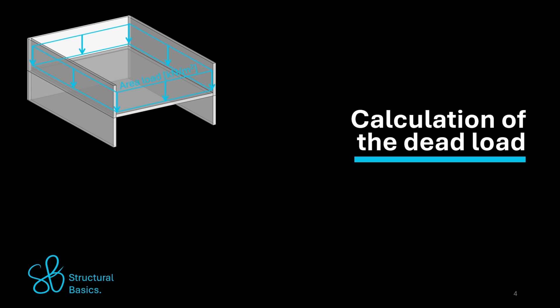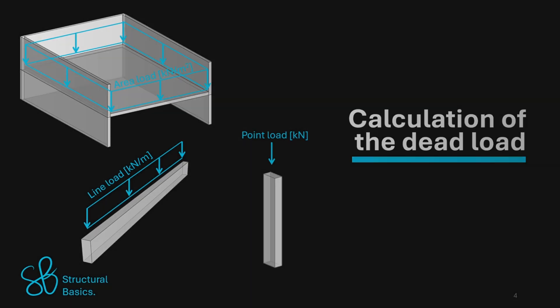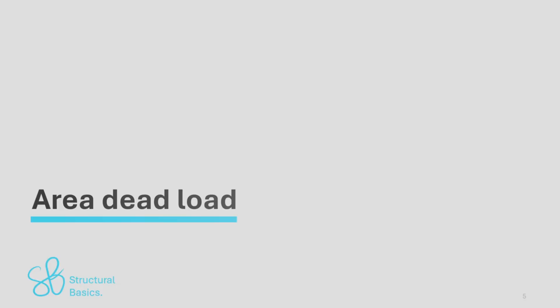On the other hand, the dead load applied on 1D static elements like beams and columns are usually either line or point loads with the unit kilonewton per meter and kilonewton. So let's have a look at how to calculate different dead load types.